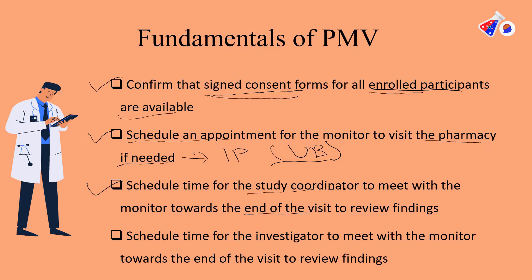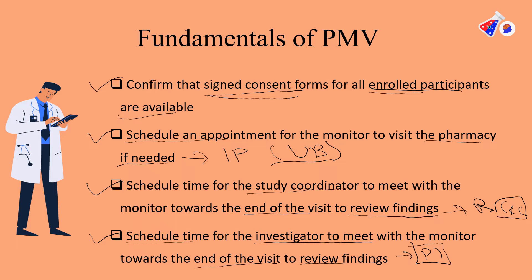Once all documentation and source data are reviewed, we meet with the study coordinators to review the findings and get clarifications. After clarification, we move toward resolution. Once all issues are resolved or clarified, we schedule time during the monitoring visit to meet the study investigator toward the end of the visit. We review findings with the CRC and inform the PI, clearly explaining how the trial is being conducted, our evaluation, the identified issues, and how the findings need to be handled.